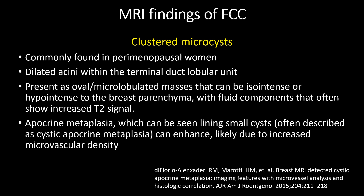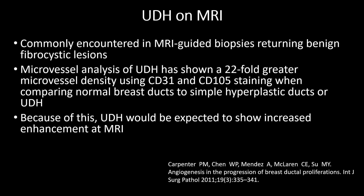MRI findings of clustered microcysts: these are commonly found in perimenopausal women and are dilated acinide within the terminal duct lobular units. These present as oval or micro-lobulated masses that can be iso-intense or hypo-intense to the breast parenchyma with fluid components that often show increased T2 signal. Apocrine metaplasia, which can be seen lining small cysts — often described as cystic apocrine metaplasia — can enhance, likely due to increased microvascular density. UDH on MRI is frequently encountered; microvessel analysis of UDH has shown a 22-fold greater microvessel density using CD31 and CD105 staining compared to normal breast ducts, so UDH would be expected to show increased enhancement at MRI.